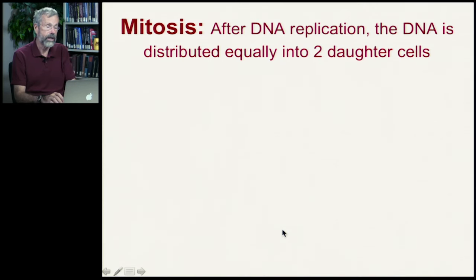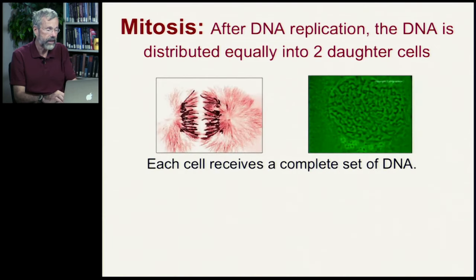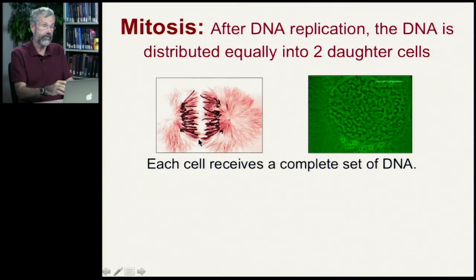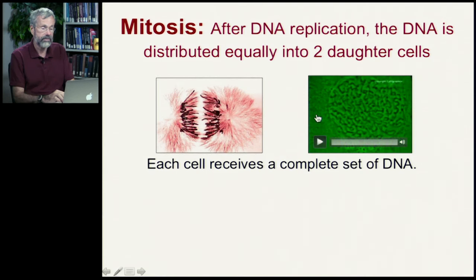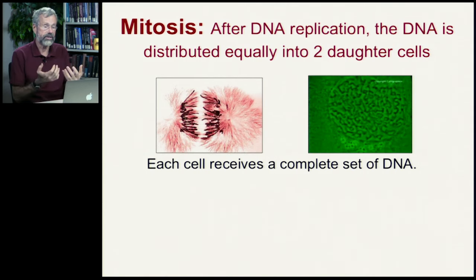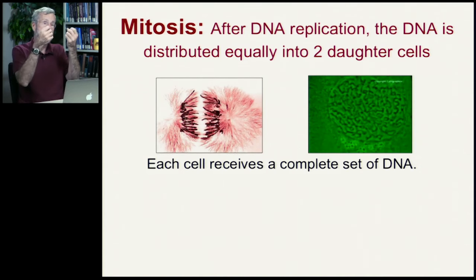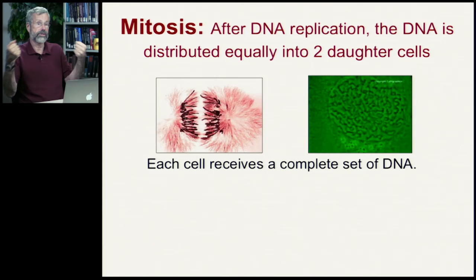What we follow next is what happens after DNA replication in a process called mitosis, where the DNA is distributed into the daughter cells. All the chromosomes will line up with their sister chromatids along the middle, and then the sister chromatids get separated into the daughter cells. I want you to follow the accounting of how these sister chromatids all line up and then get separated at mitosis.